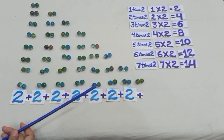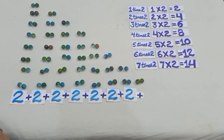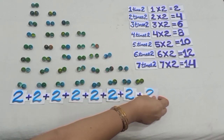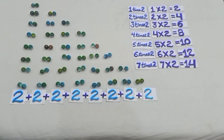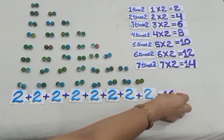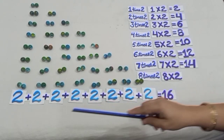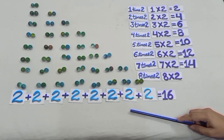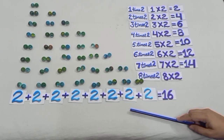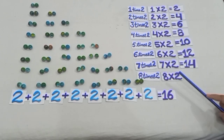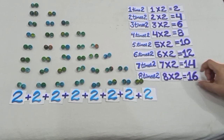Earlier we had 14 marbles and now 2 marbles more, so we have 16 marbles. You can see we have 8 groups with 2 marbles in each group, and we write it as 8 times 2, which means 8 into 2 is equal to 16.